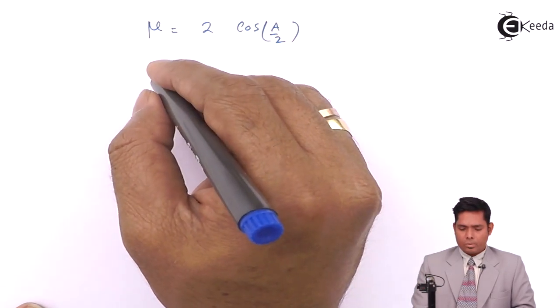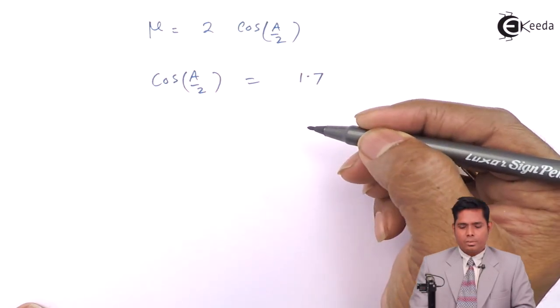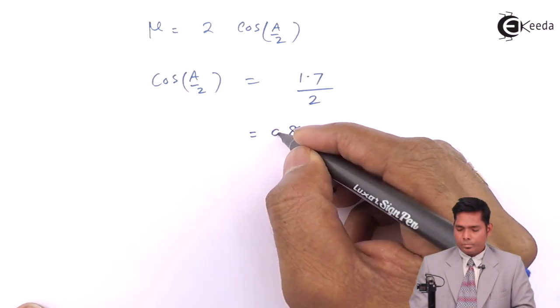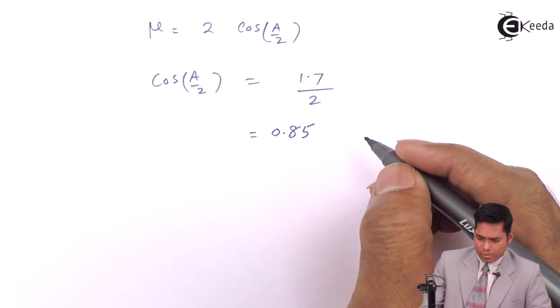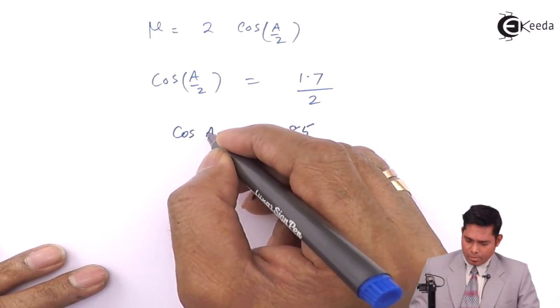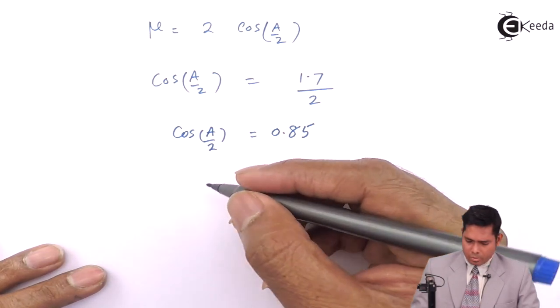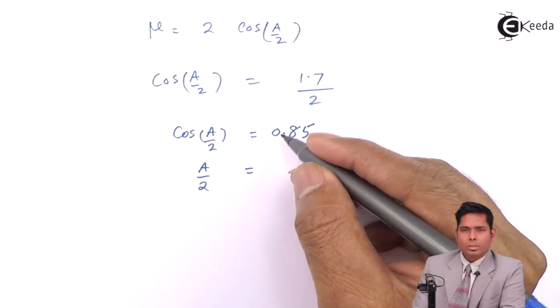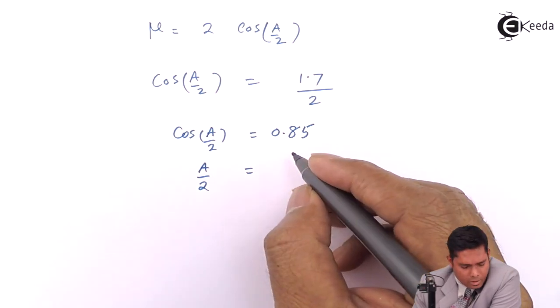Mu is given as 1.7, so 1.7 divided by 2 which is 0.85. So cos of A by 2 is this much, and therefore A by 2 is cos inverse of 0.85. I'm just writing it directly: 31 degrees and 47 minutes.